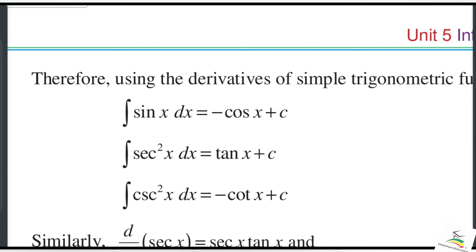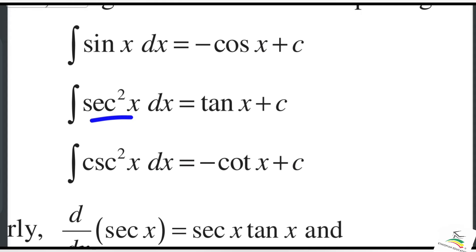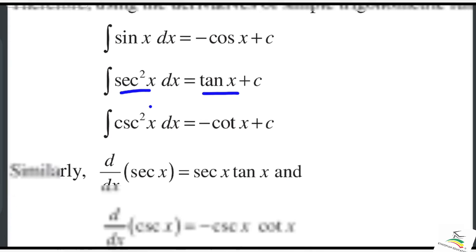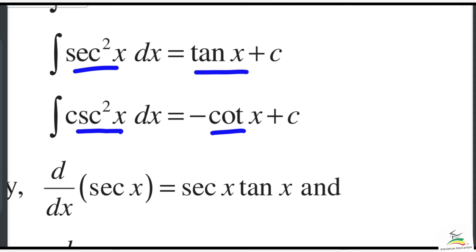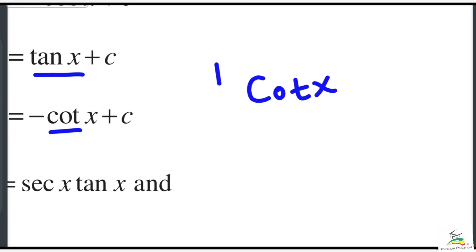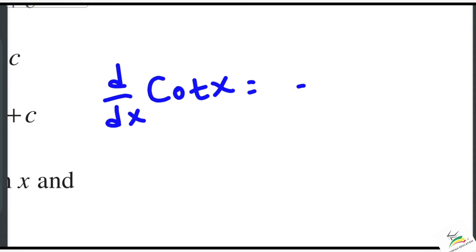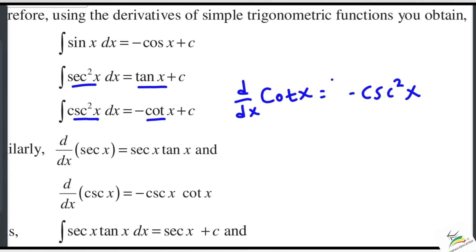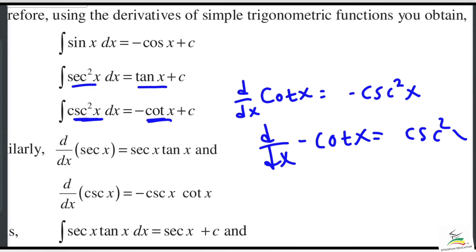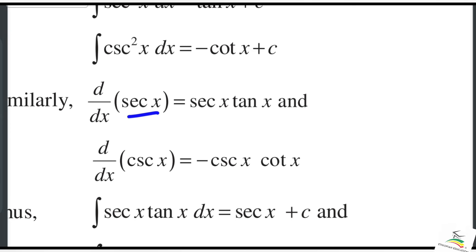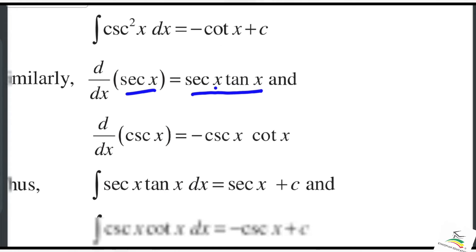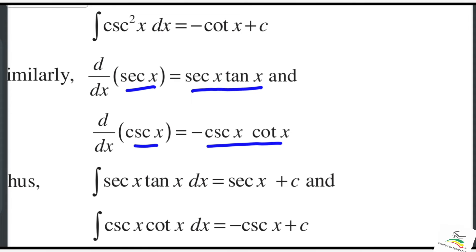The integration of sine x is negative cos x plus C. Now for sec x and cosec x: the derivation of sec x is sec x times tan x. And the derivation of cosec x is negative cosec x times cot x.